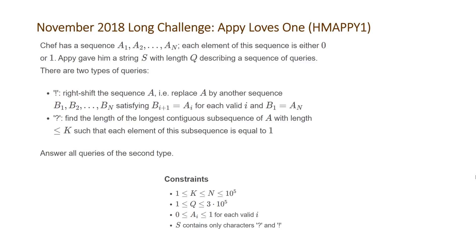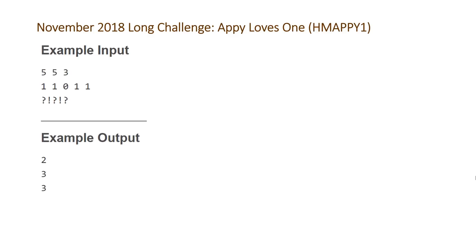Let's take a look at the example CodeChef provided. The first three numbers are n, q, and k — n is the number of elements, q is the number of queries, and k caps the length of the sequence we're looking for. The next two lines are our array and our string of queries. Starting with the array, the first query is a question mark, asking what's the longest sequence of ones. We can clearly see that it's 2, so we output 2.